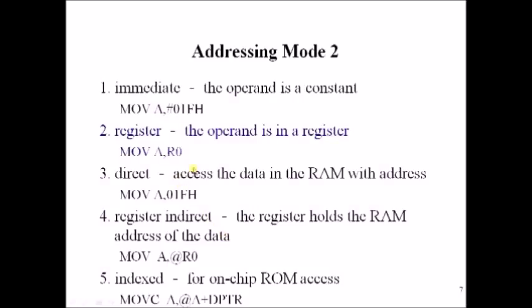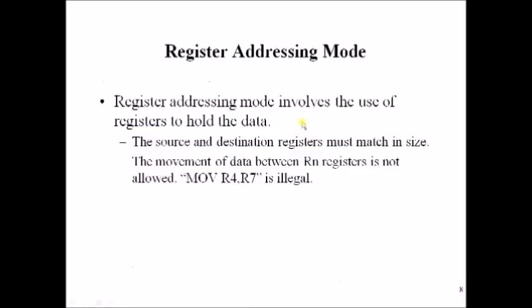Now let us see the second addressing mode: register addressing mode. In register addressing mode, the value is stored inside a register and that register is given as a source operand in the instruction. Register addressing mode involves use of registers to hold the data. The source and destination registers' size must be the same, or the destination must be equal to or greater than the source operand.